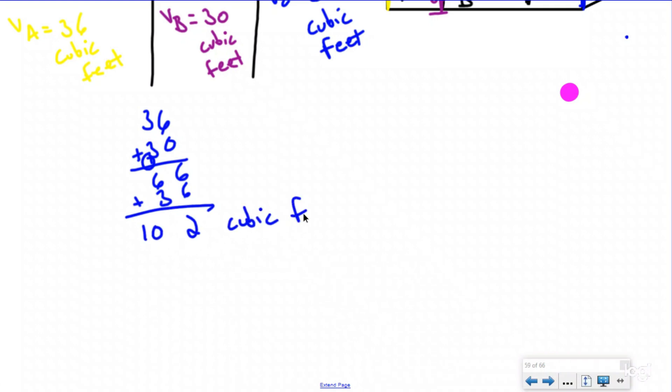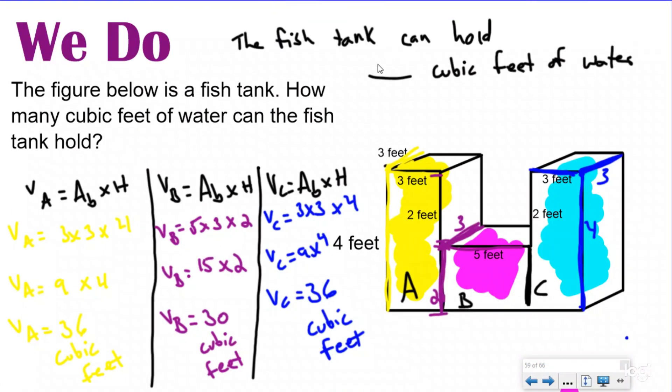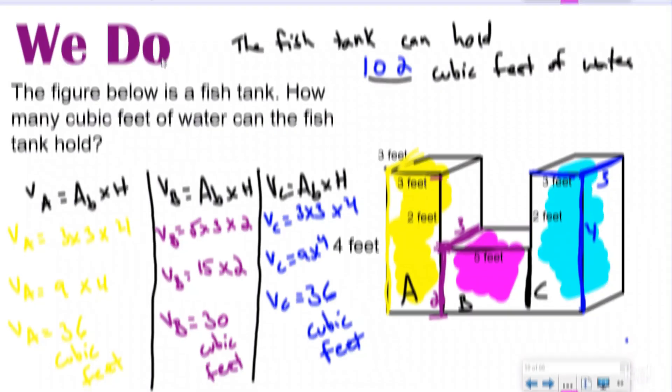That is the total once I added all of my little prisms together. So the fish tank can hold 102 cubic feet of water.